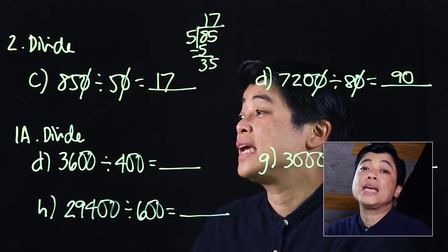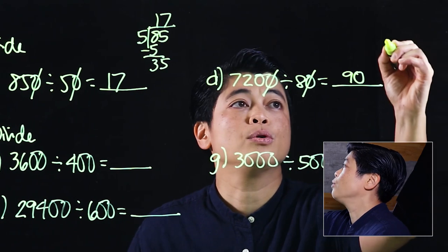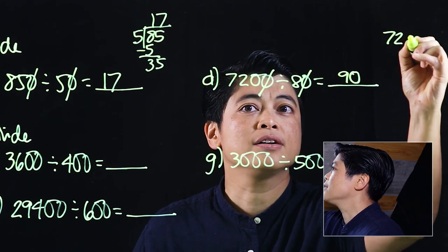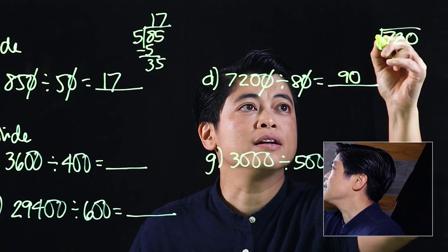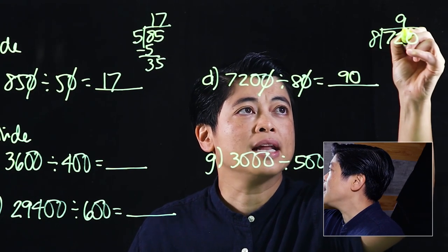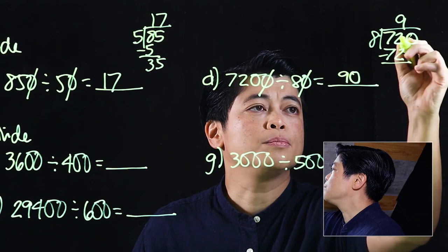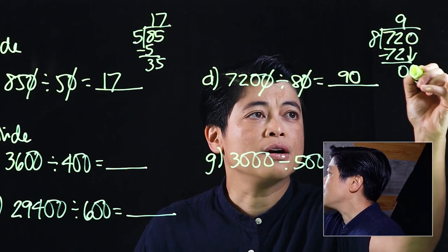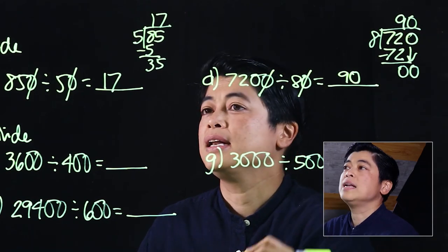Again, if we cannot do it mentally, 720, don't force it. 720 divided by 8: that will be 9, multiply 72, subtract 0, bring down 0, that will be 90.